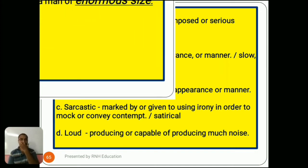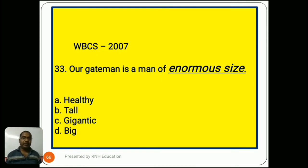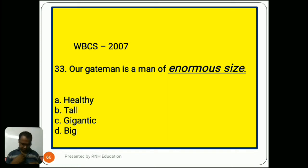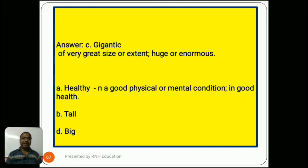Question number 33, from 2007: 'Our gateman is a man of enormous size.' Options are A) healthy, B) tall, C) gigantic, D) big. The answer is C) gigantic, meaning of a very great size or extent, huge or enormous. Option A, healthy, means in good physical or mental condition. Options B and D, tall and big, are very common words. So the right answer is C, gigantic.